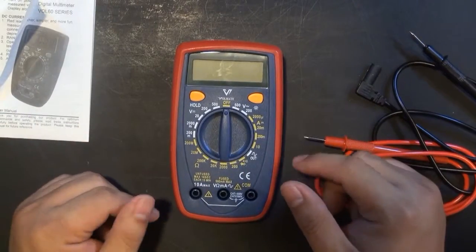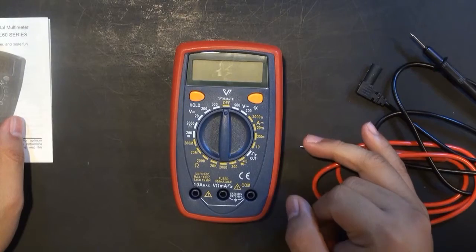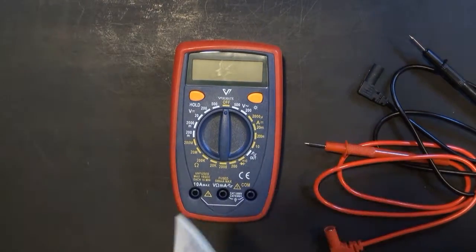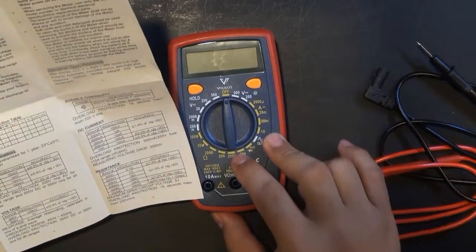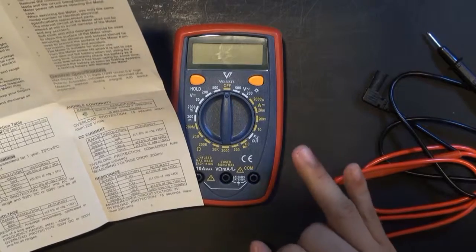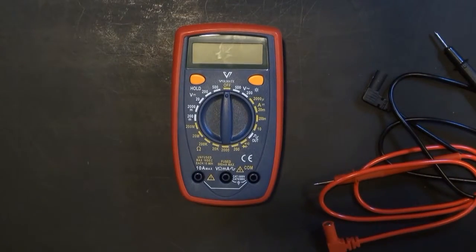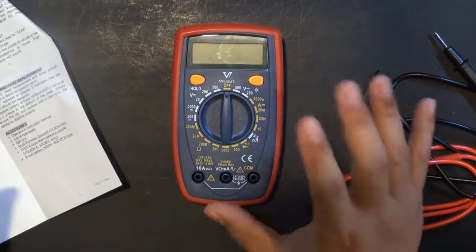Alright, now they said a good multimeter needs to measure at least resistance, voltage, AC, DC, and continuity. And so far, based on the manual here, it looks like this multimeter measures DC voltage, AC voltage, continuity, current resistance, temperature, capacitance, and battery test.